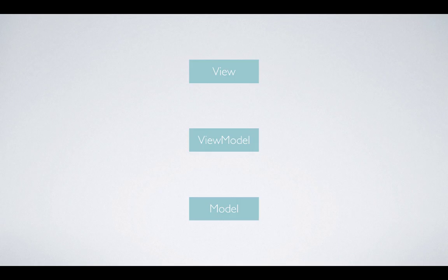The view model is the data that is going to be bound to the view. The view can talk to the view model, but the view cannot directly talk to the model. The model is your domain, your main object — that is, your business logic. The view model can talk to the view and update it, but only the view model can talk to the model.